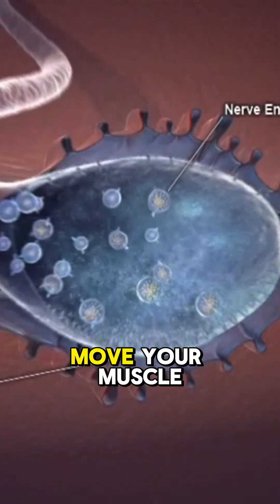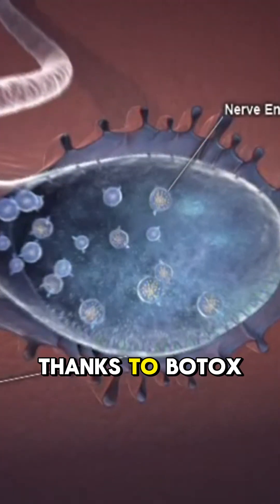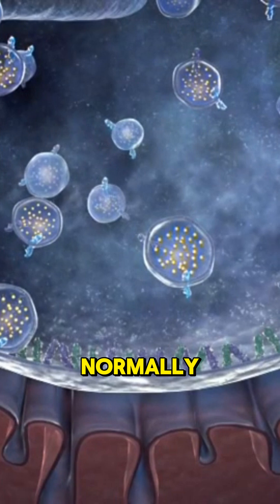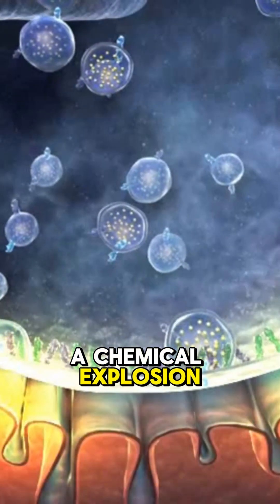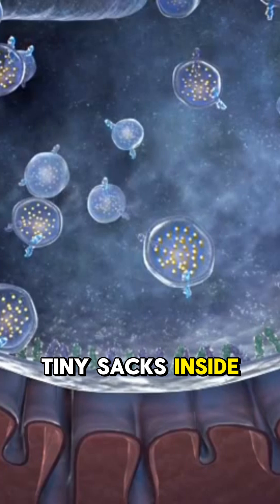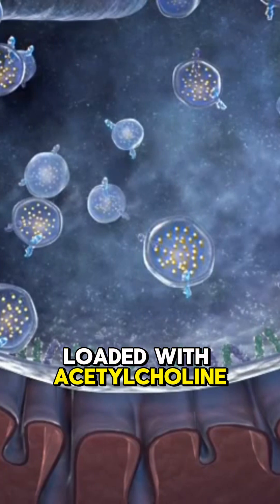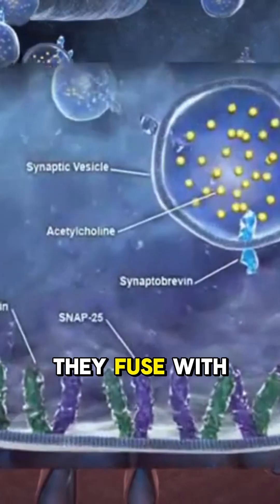Your brain says move, your muscle says no thanks to botox. Normally when a nerve fires off a signal, it ends in a chemical explosion. Tiny sacs inside the nerve terminal loaded with acetylcholine rush to the edge, they fuse with the membrane and dump acetylcholine into the gap.